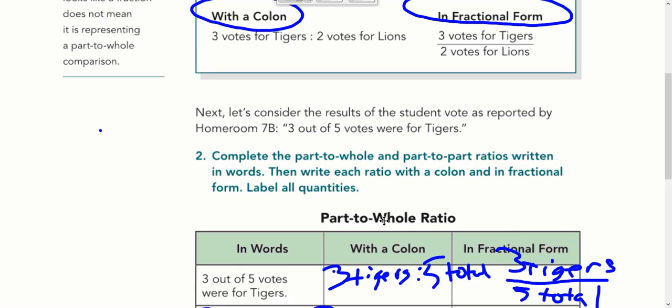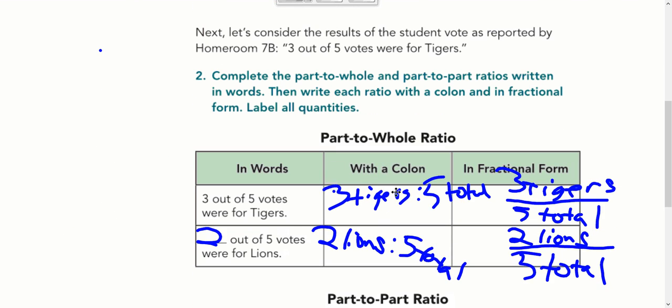Now we are just practicing writing it from word form into colon form. Basically, what we're doing is using the same information. We're just writing it as a fraction now. So the first number gets put on top and the second number gets put on the bottom. Here, we're changing it up. Instead of three tigers, we're talking about the two lions. So it's the other part. And this is a part-to-whole ratio. So two lions to five total, and then we write it as two lions over five total.